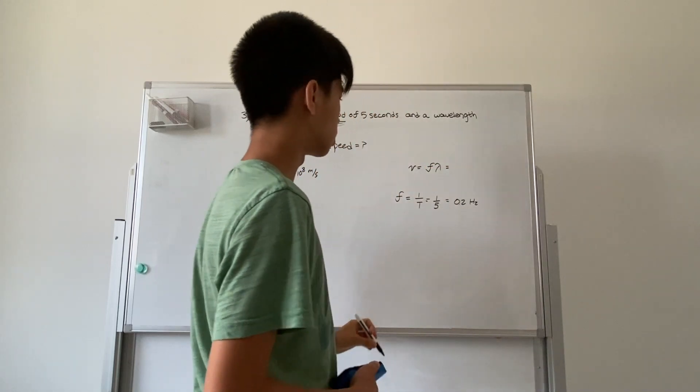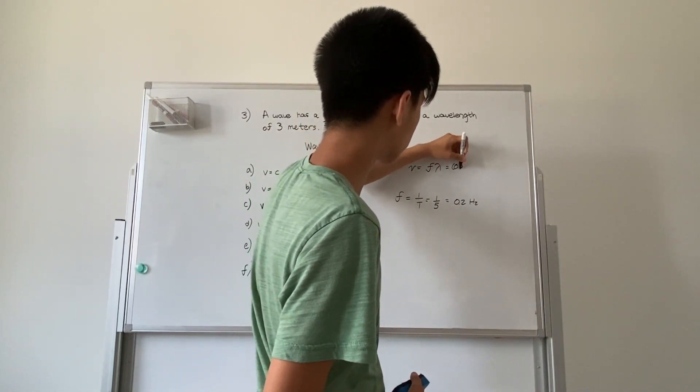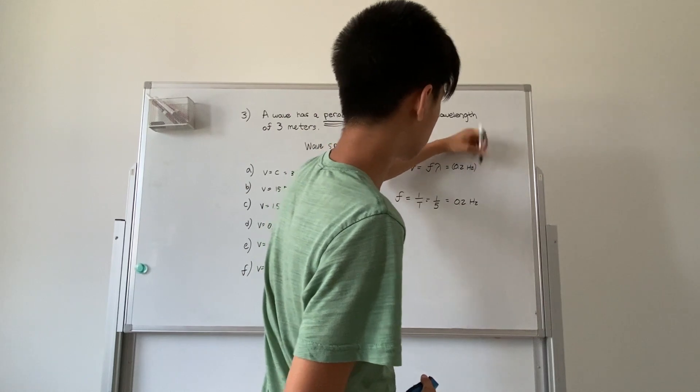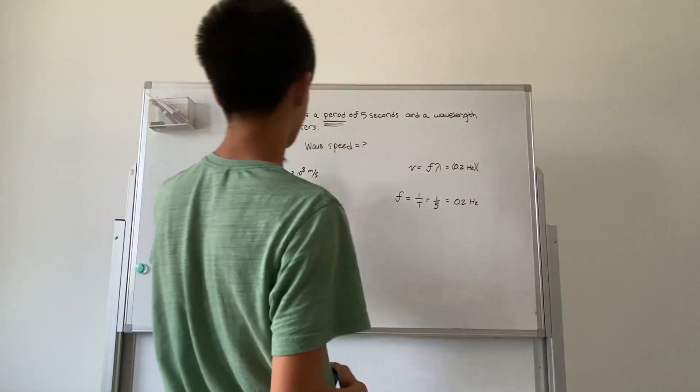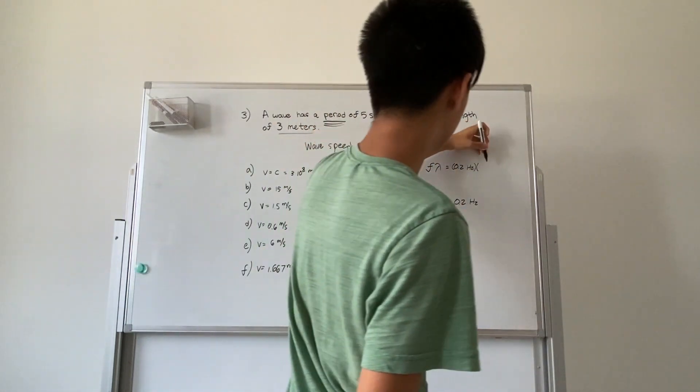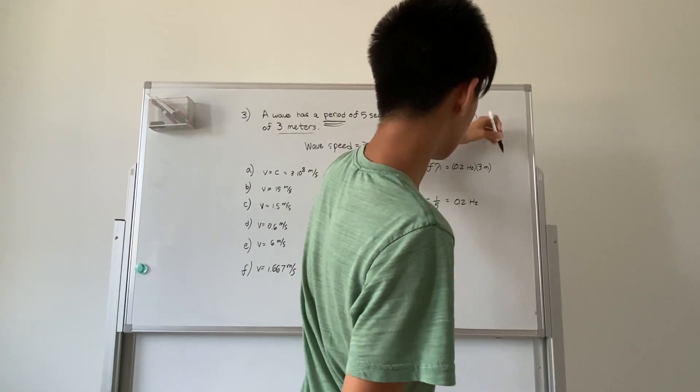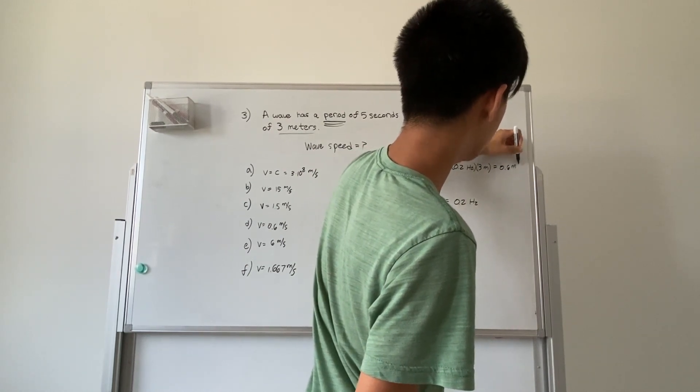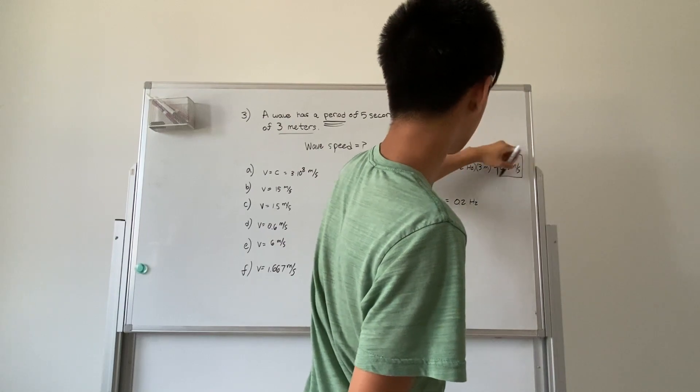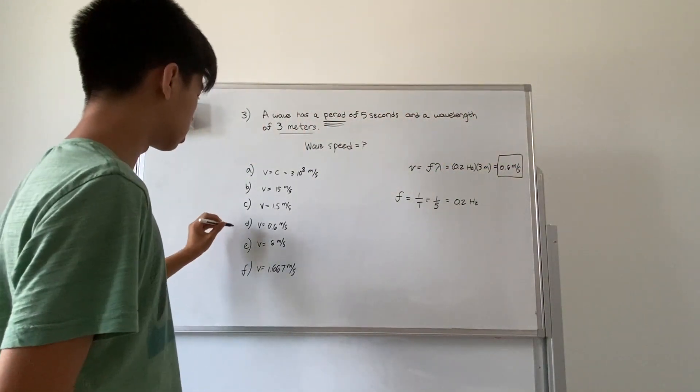That would mean that our velocity is 0.2 hertz times our wavelength which is three meters, which gets us 0.6 meters per second. Therefore our answer is D.